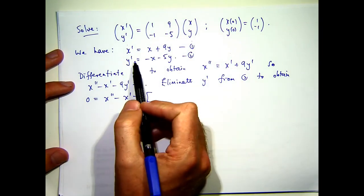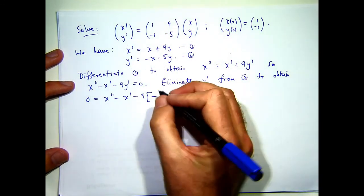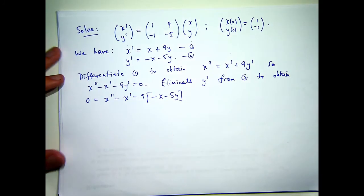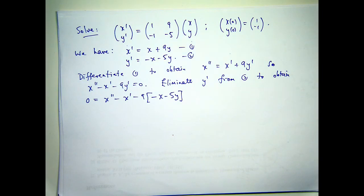So I'm going to get... so y dash from the second equation is this. So I'm going to replace y dash with that. And you can see, I've got an extra... some extra x's in there, but also a y. So I've almost got a second-order problem in x alone, and x prime and x double prime. Lastly, I'm going to get rid of this y here.